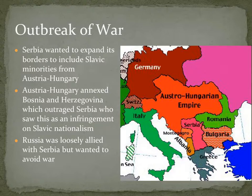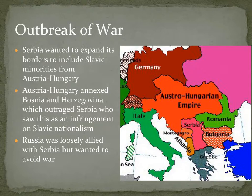One of the things Austria-Hungary did during this time was annex a territory next to Serbia called Bosnia and Herzegovina. Bosnia and Herzegovina also contained Slavic people, and Serbia saw this as very offensive to what it was trying to do — forming a large Slavic nation. Austria-Hungary was sending the message that it was a large empire and was not going to allow Serbia to do whatever it wanted.